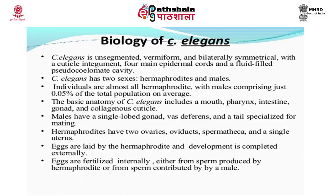C. elegans is unsegmented, vermiform and bilaterally symmetrical with a cuticle integument and fluid-filled pseudocoelomate cavity. C. elegans has two sexes: hermaphrodites and males. Most individuals are hermaphrodites, males comprising only 0.05 percent of the total population on average.